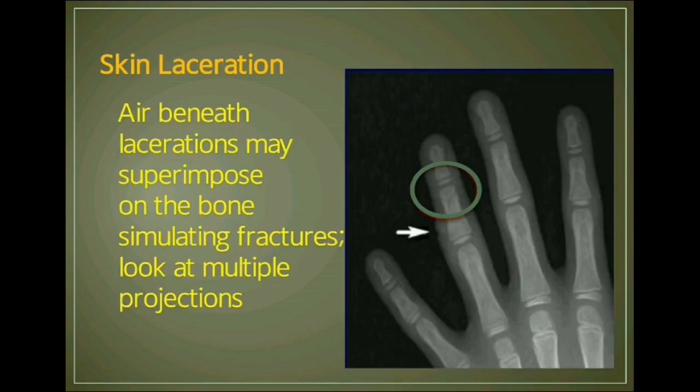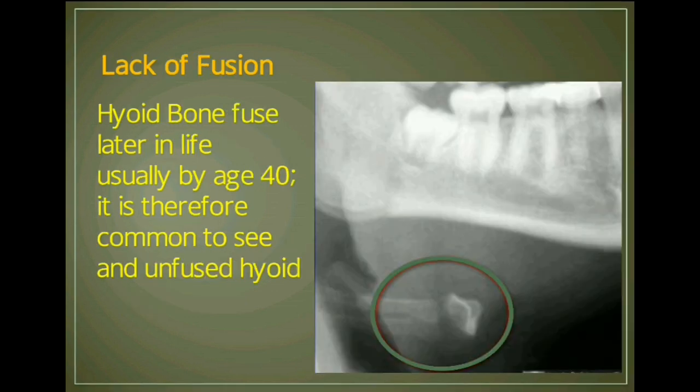Skin lacerations: air beneath lacerations may superimpose on the bone, simulating fractures, so we have to look at multiple projections. Lack of fusion: the hyoid bone fuses later in life, usually by age 40, so it is common to see an unfused hyoid.